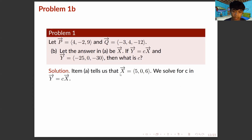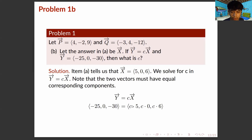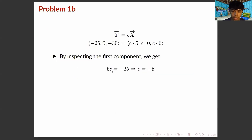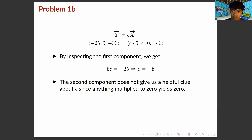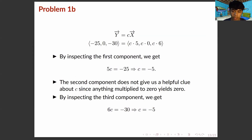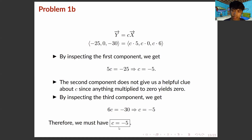For part D, the solution is to compare vector X and vector Y and inspect what constant C must be multiplied to vector X to obtain vector Y. By inspection, C times 5 should equal −25, giving C equals −5. For the second component, 0 equals 0 provides no information. For the third component, C times 6 equals −30, giving C equals −5. Therefore, C equals −5.